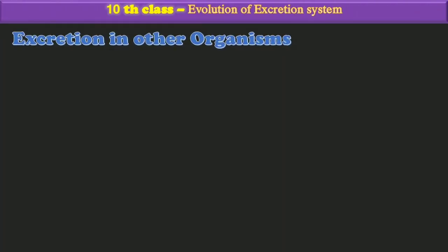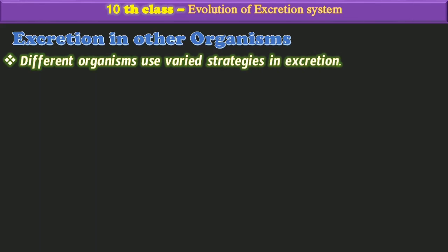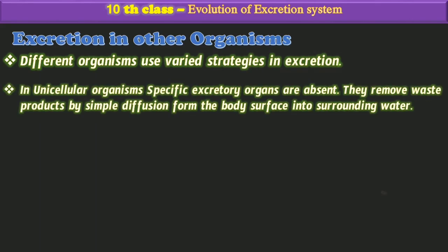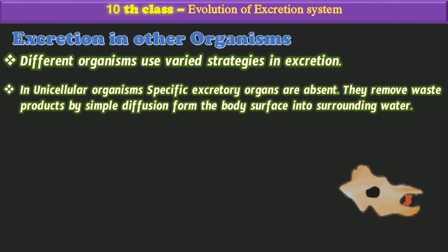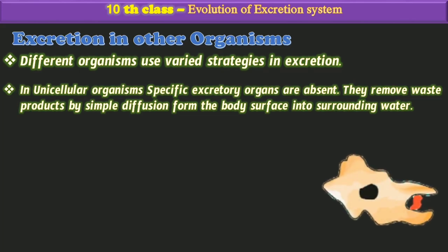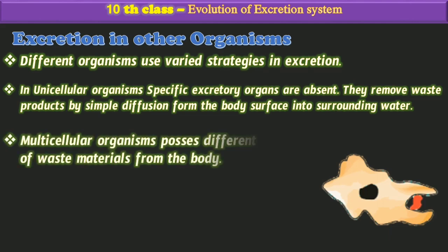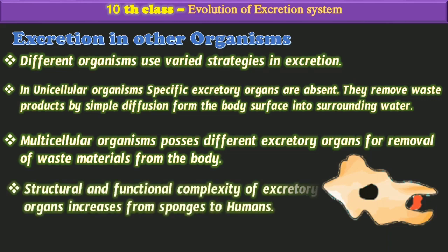Different organisms use various strategies in excretion. In unicellular organisms, specific excretory organs are not present. They remove waste products by simple diffusion from the body surface into the surrounding water.